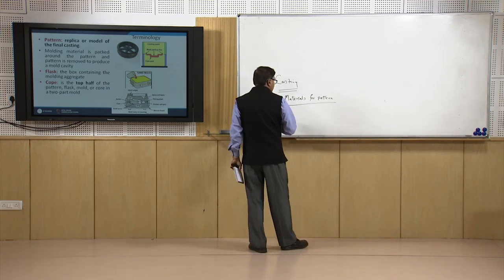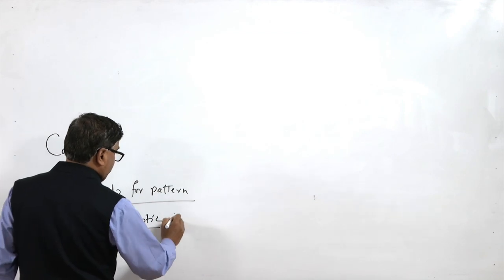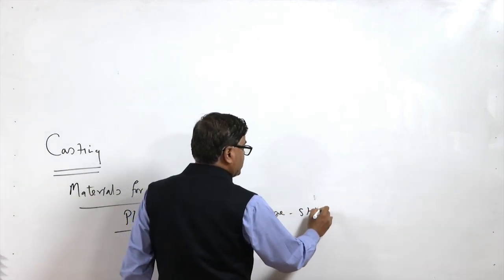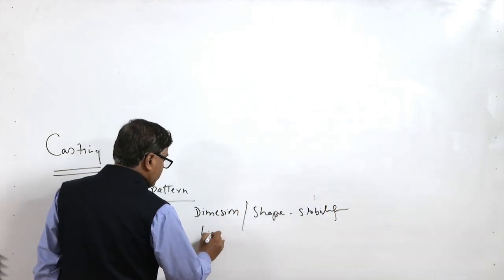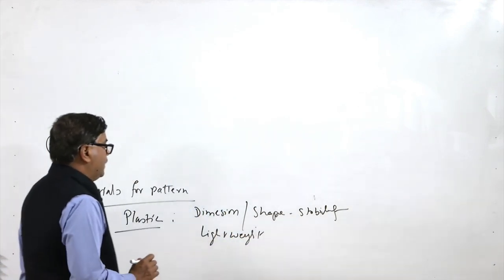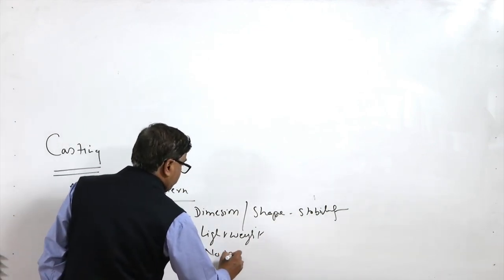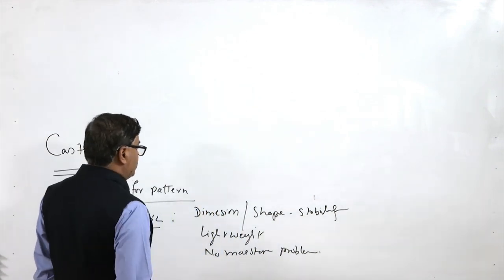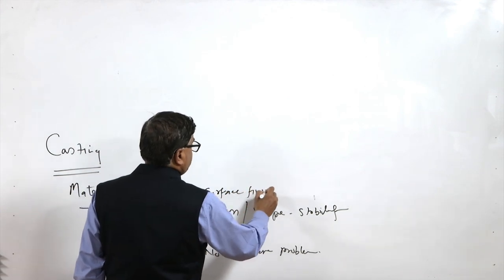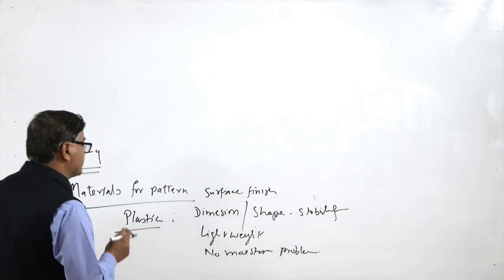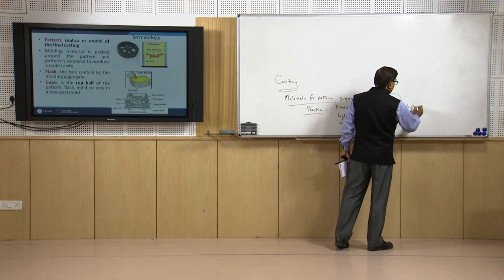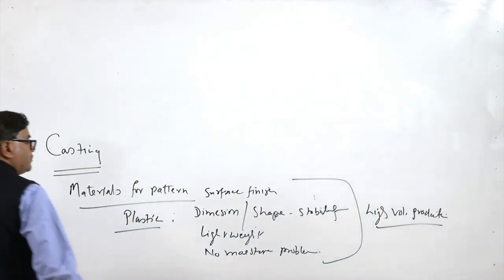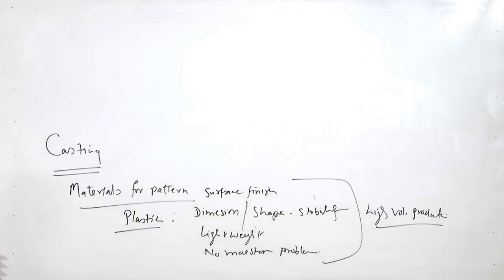Plastics are advantageous in that the dimensions and shape of the pattern have good stability, they are light in weight — which was the negative point of metallic patterns — and there is no moisture absorption problem. Dimensional stability is good, surface finish is good, and the surface finish of mould surfaces produced by plastic patterns is also good. These are used for high volume production. These are the materials used for making patterns.